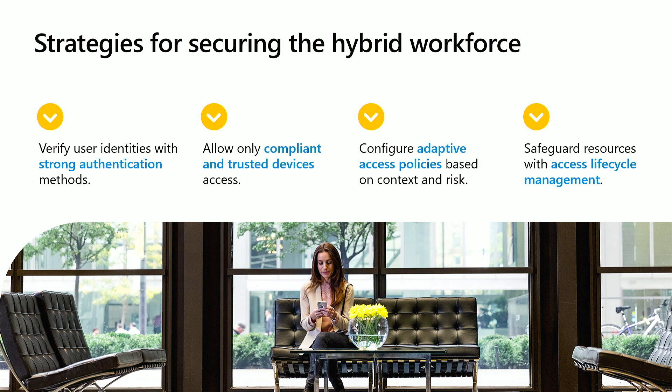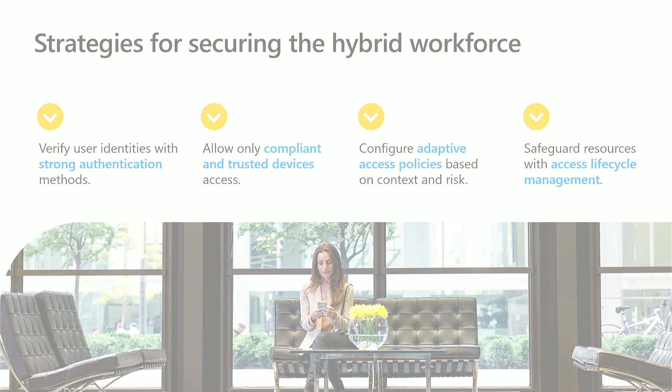We need to make sure we are protecting corporate resources and controlling applications. The strategy starts with four elements: first, how can I verify user identities — you need a very strong authentication method in place. Second, how you can get insights about devices — I need to make sure the device accessing my application is a compliant device. It doesn't mean that having a password alone grants access to any application; the device is a very important factor. Then, how you can configure what we call an adaptive access policy.